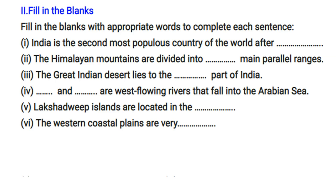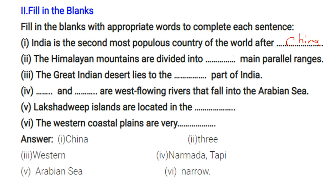Fill in the blanks: India is the second most populous country of the world after China. The Himalayan mountains are divided into three main parallel ranges. The great Indian desert lies to the western part of India. Narmada and Tapi are west-flowing rivers that fall into the Arabian Sea. The Lakshadweep Islands are located in the Arabian Sea. The western coastal plains are very narrow.